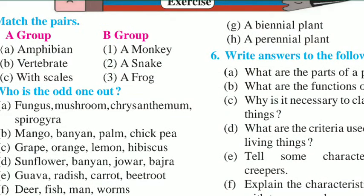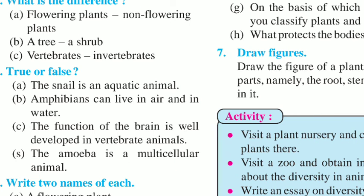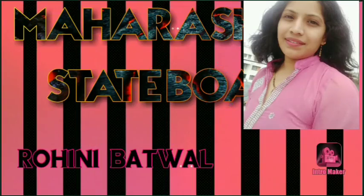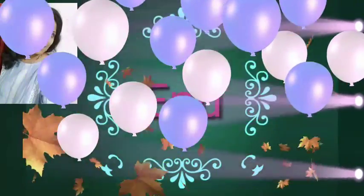And here we have finished this lesson, students. Hopefully, you understood the lesson. You have to write difficult words five times, definitions three times, and write all the exercises in your classwork notebook. I am also going to give you one activity: you have to write an essay on diversity in plants and on diversity in animals in your activity notebook. Be safe at home. Bye, students.